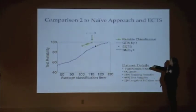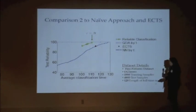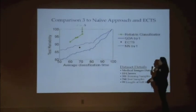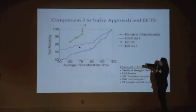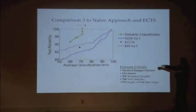Here's a second comparison — our approach at different reliability guarantees classifies more reliably and earlier than the other approaches. And a third comparison shows much the same experience: ECTS does better than nearest neighbor most of the time, but not as well as the better classifiers.